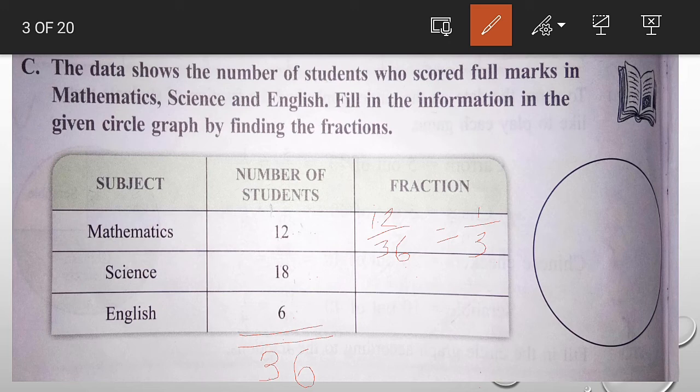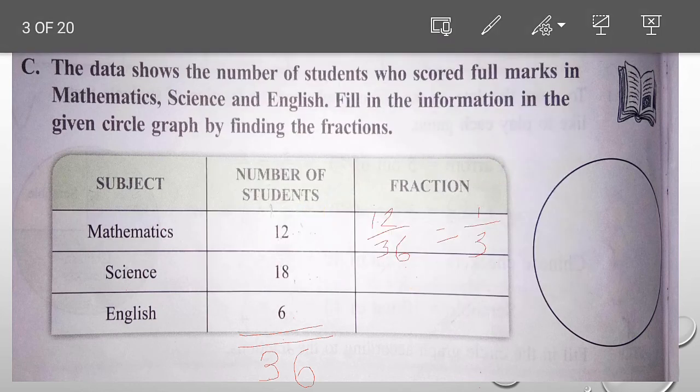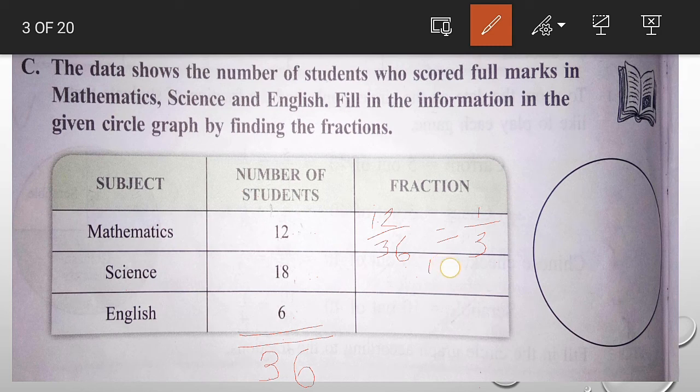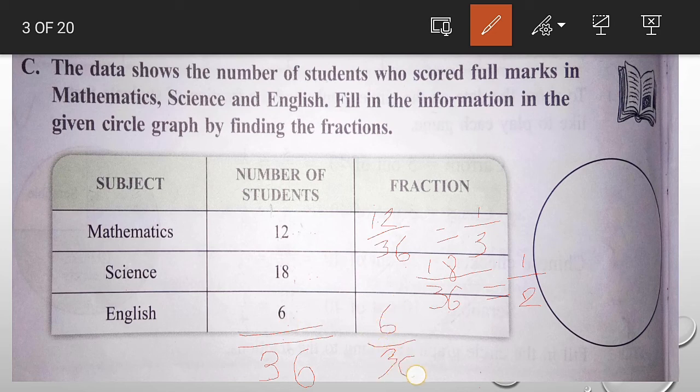Now science, number of students is 18. So 18 upon 36, that is 1 upon 2. And here 6, 6 upon 36, that is, 6 goes into 36 six times, so 1 upon 6.